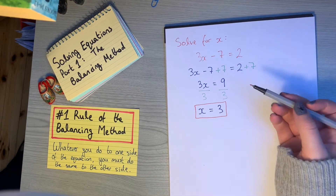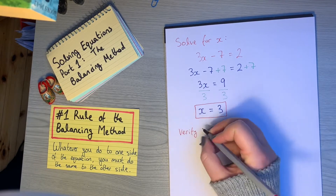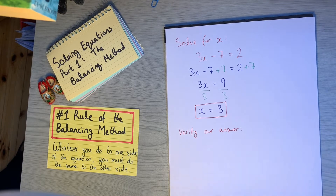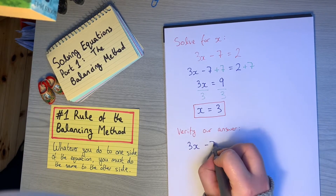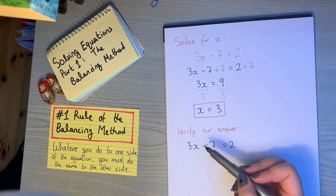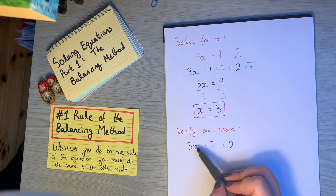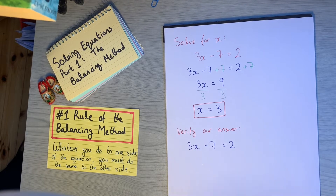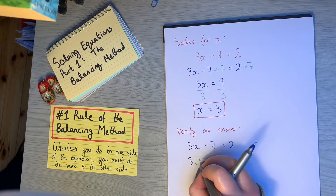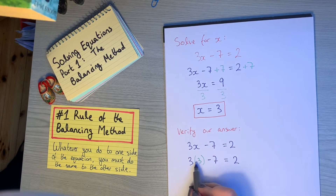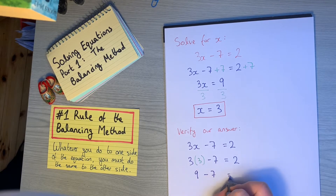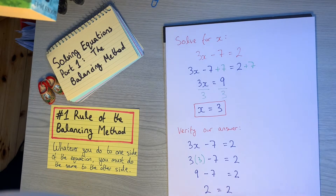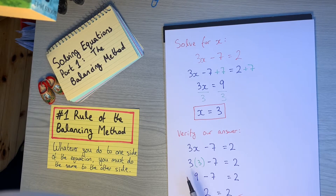But how do we know if we're right? What we can do is verify our answer — verify means to check that it's correct. Starting with our original equation 3x minus 7 equals 2, wherever we have an x we plug in our answer of 3. So 3 times 3 minus 7 equals 2. That gives us 9 minus 7 equals 2, which is 2 equals 2 — correct. So we've shown that x equals 3 is indeed the solution to this equation.